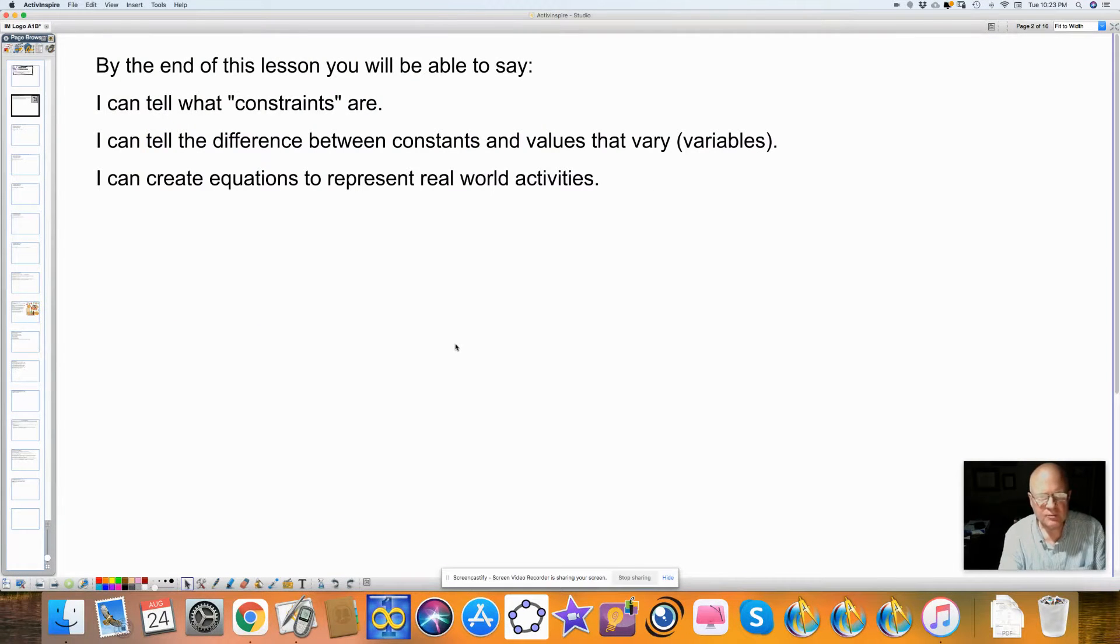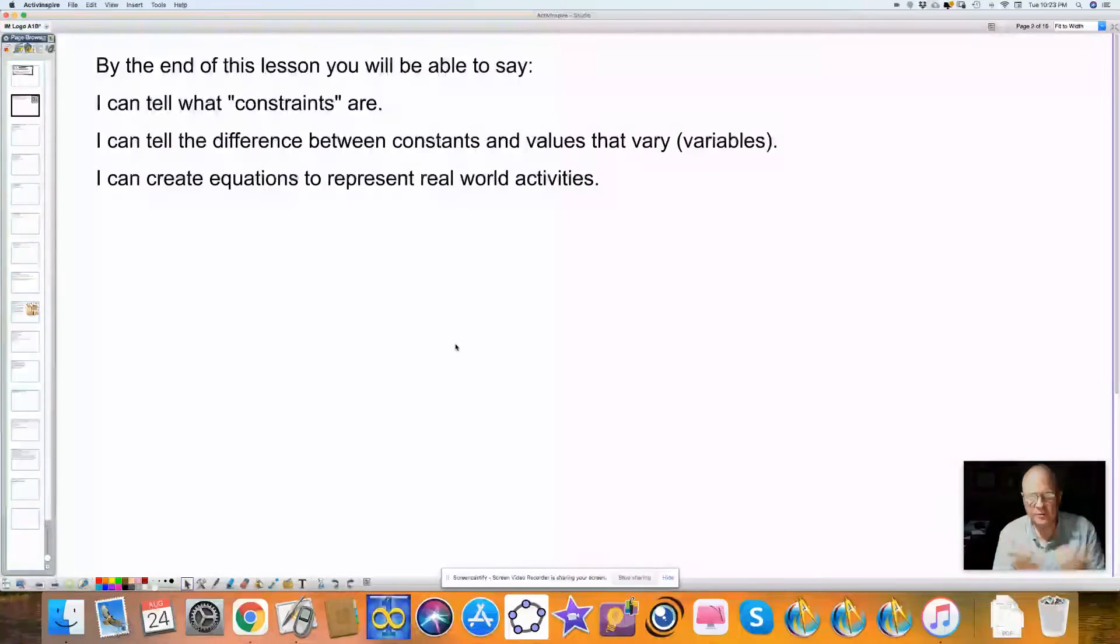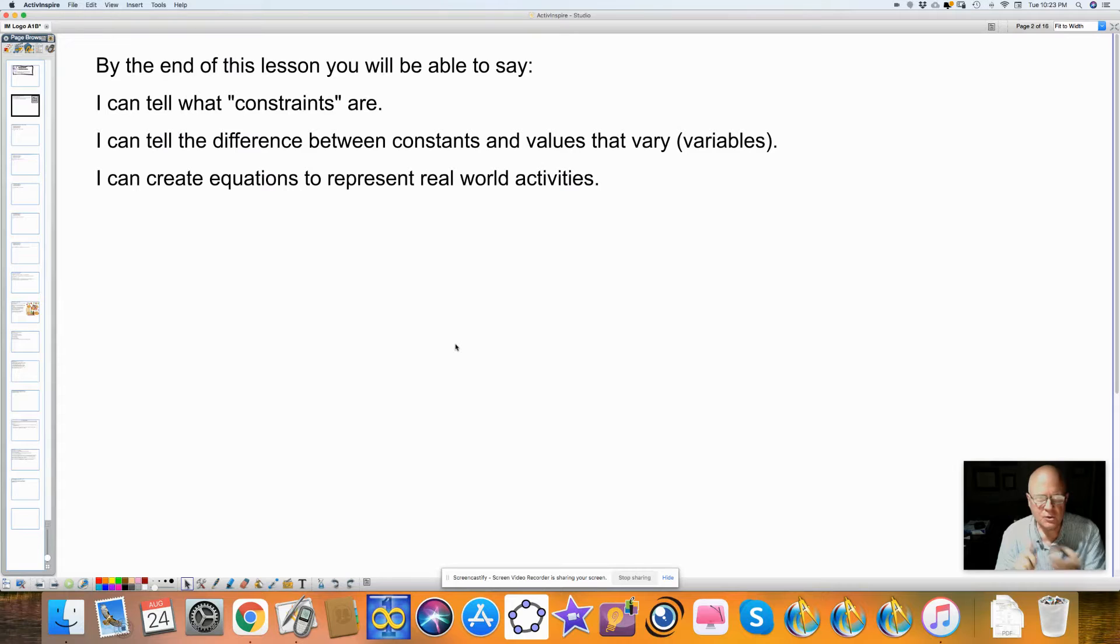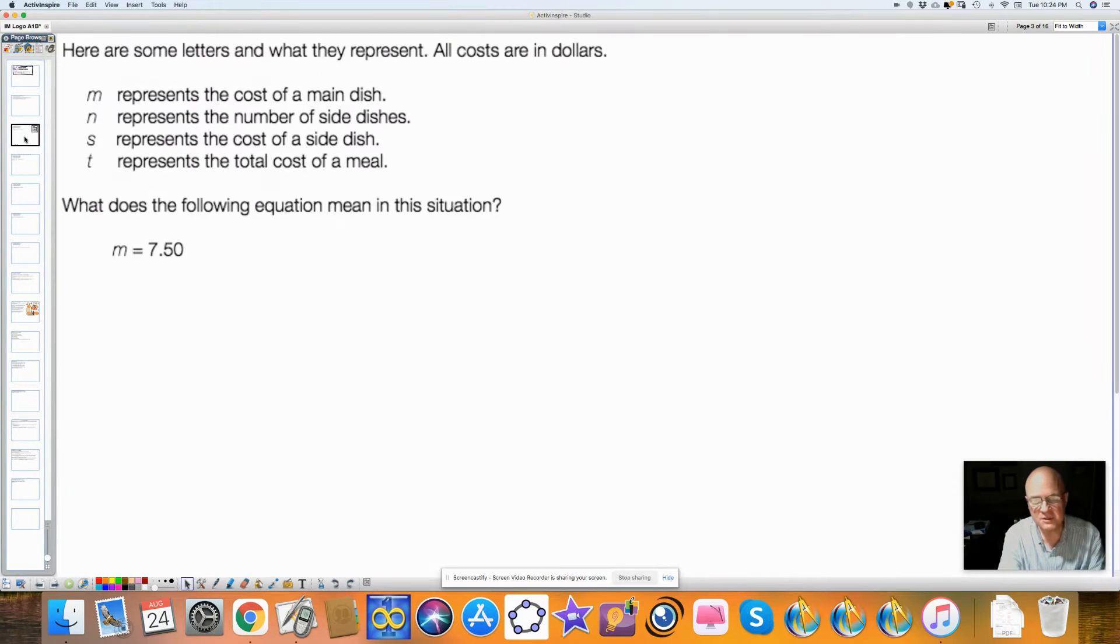So our first thing was, by the end of this lesson, these are the objectives, what you're supposed to get out of this lesson. You can tell what a constraint is. You can tell the difference between values that are constant and ones that are changing, or that are variables. And you can also create equations to model real-world situations.